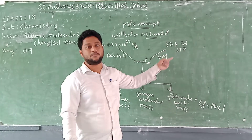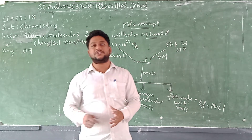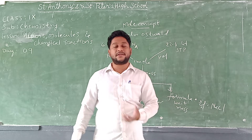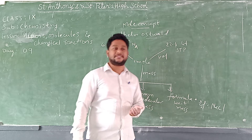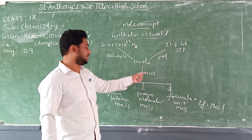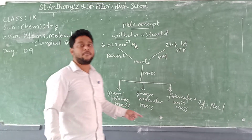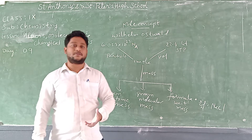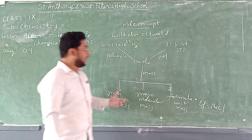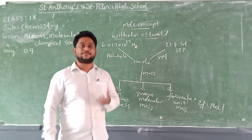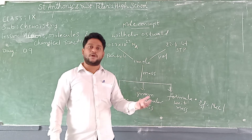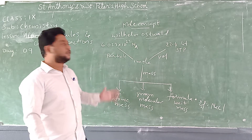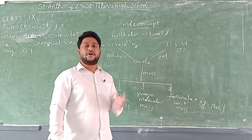One mole of substance occupies 22.4 liters of volume. The gases in this room occupy 22.4 liters at STP. Formula unit mass applies to substances formed from ions — cations (positive) and anions (negative). Using the mole concept, we can calculate the volume a substance occupies, its atomic or molecular mass, and the number of particles present. We are going to learn three important formulas from this mole concept to solve numericals.